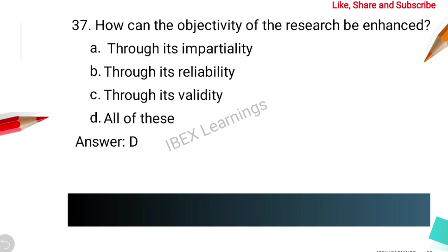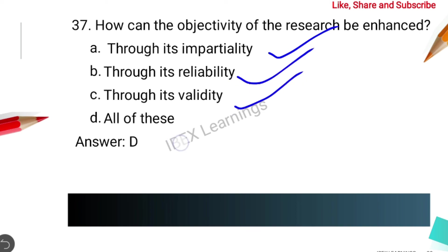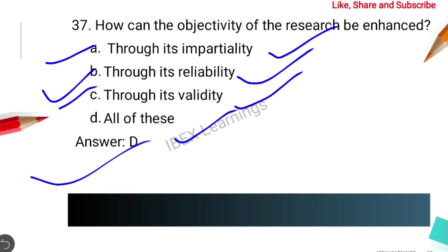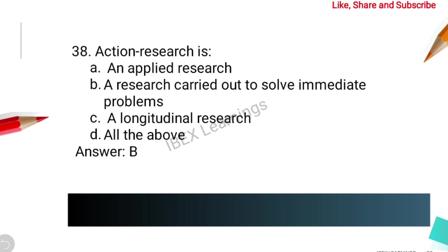The next question is: how can the objectivity of research be enhanced? The options are impartiality, reliability, validity, or all of the above. To enhance research objectivity, research must be impartial, reliable, and valid. The correct answer is option D — all of the above.